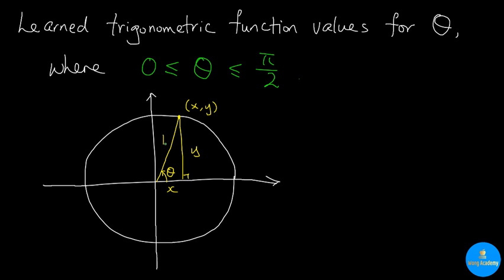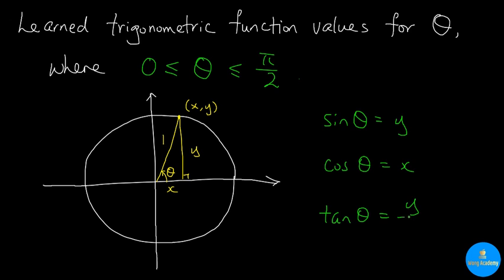From the definition of trigonometric functions on the right-angled triangle, we have sine of theta equal to y over 1, which is just y. Cosine theta is equal to x over 1, which is just x. And tangent theta is equal to y over x. Hence, it is very common to denote this vertex as cosine theta comma sine theta instead of x comma y, because x is cosine theta and y is sine theta.